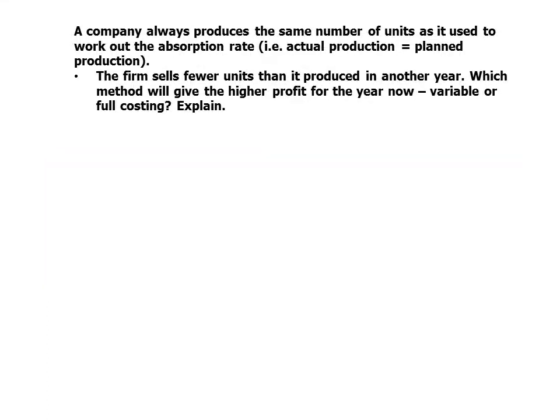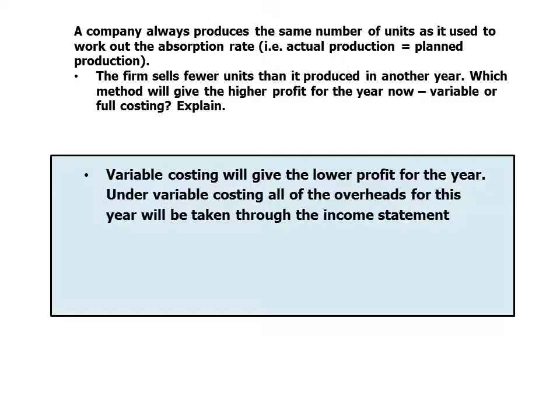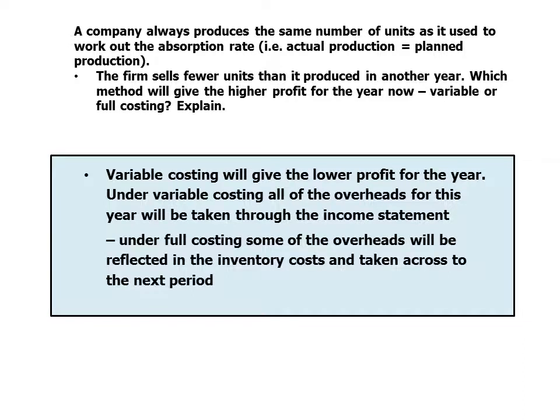Same assumption: actual production equals planned production. This time the firm sells fewer units than are produced in another year. Which method will give the higher profit — variable or full costing? Variable costing will give the lower profit. Under variable costing, all of the overheads for this year will be taken through the income statement. Under full costing, some of the overheads are reflected in the inventory costs and taken across to the next period, so they are deferred.